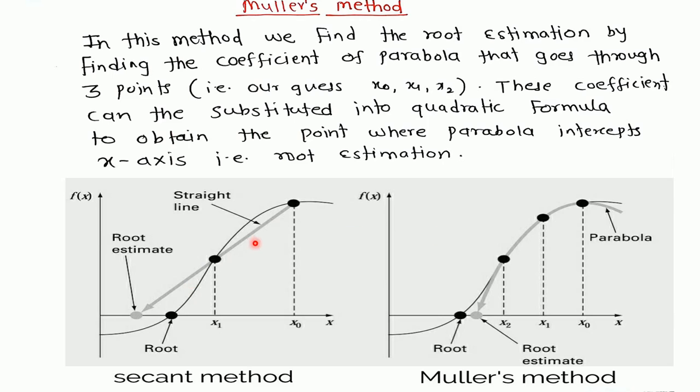See, in secant method, if this is the graph of the function and these are two initial approximations, then we are projecting a straight line through these two points. Then this straight line cuts the x-axis at this point, then this is our required root estimation.